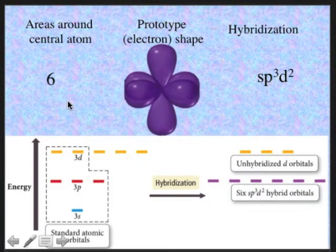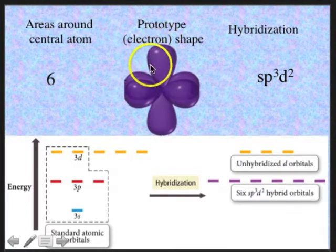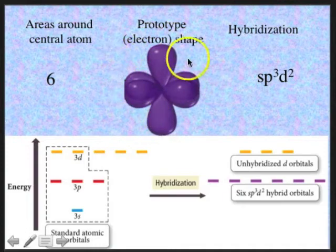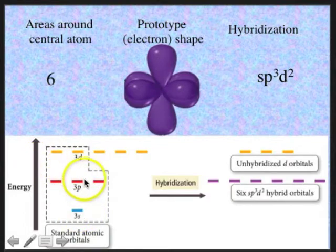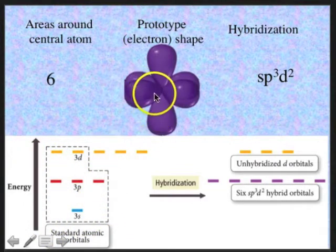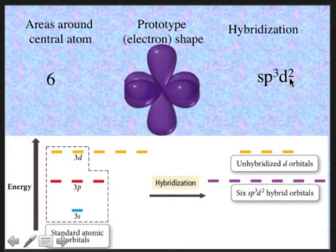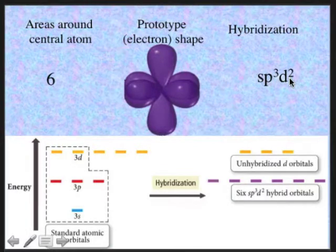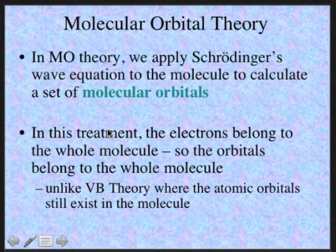Finally, if we have six areas around the central atom, the prototype shape is going to be octahedral — think of six balloons tied together. That occurs when a 3s orbital, three of the 3p orbitals, and two of the 3d orbitals are all combined to form six new energetically equivalent sp3d2 hybridized orbitals. So you need to know the hybridization of each one of these prototype shapes.